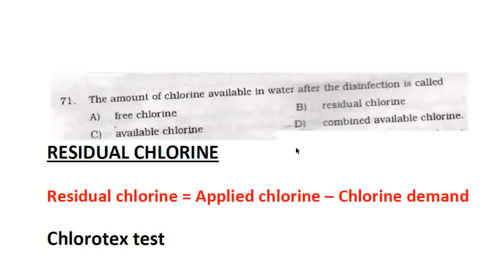The amount of chlorine available in water after disinfection is called Residual Chlorine. In water treatment, the last process is disinfection for killing disease-producing bacteria. We add chlorine for disinfection. Residual Chlorine equals Applied Chlorine minus Chlorine Demand. The right answer is option B: Residual Chlorine.